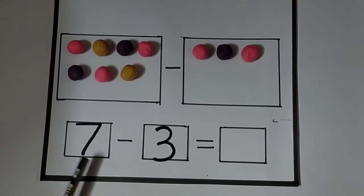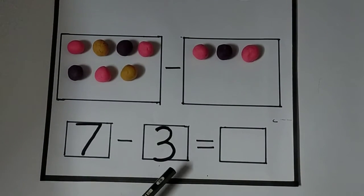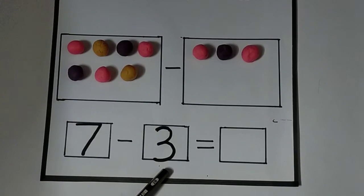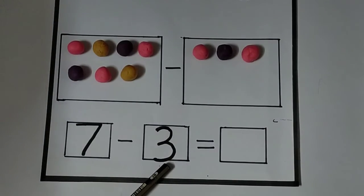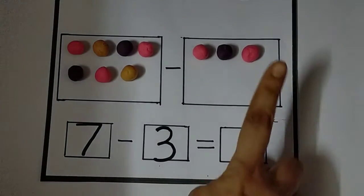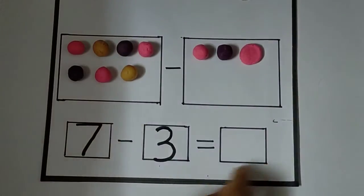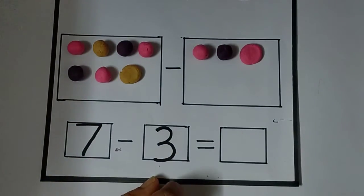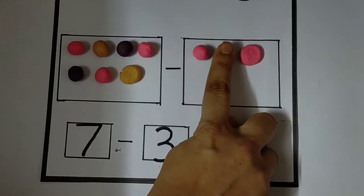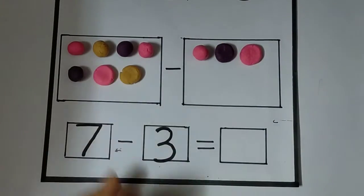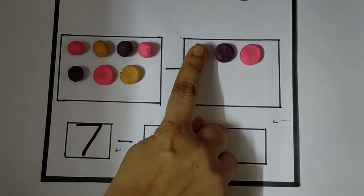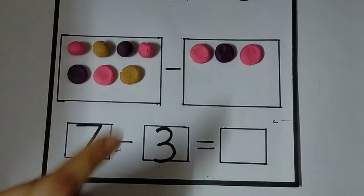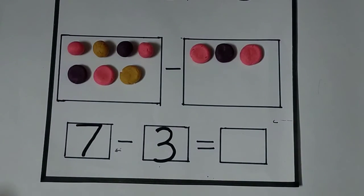So, seven minus three. So, we have to cut it, right? But, we cannot cut it here, right? So, we will smash it, okay? Smash, smash. One, then, two, three.